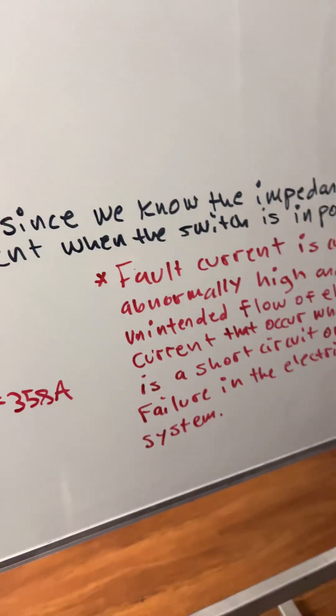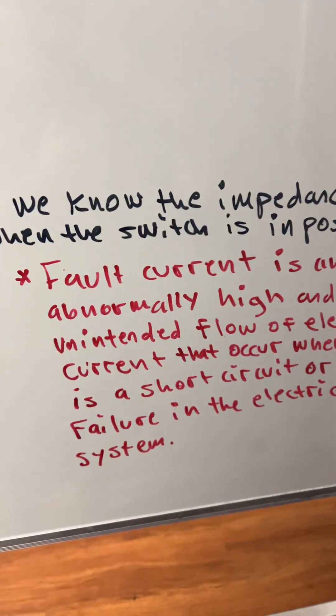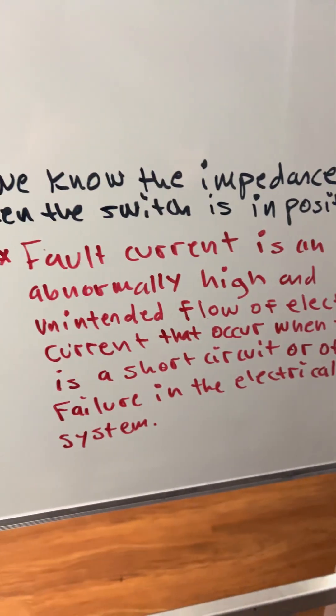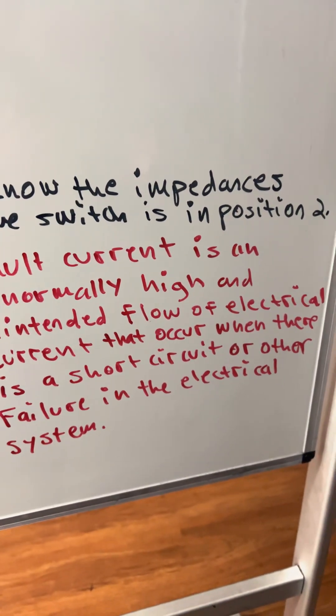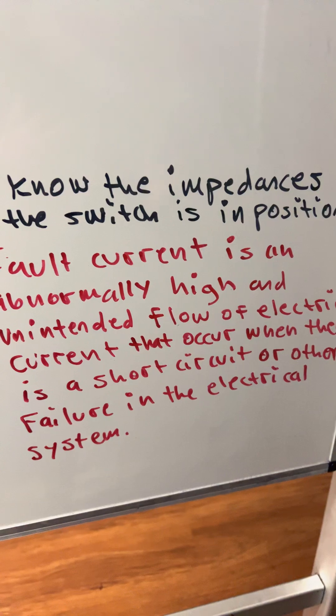So what is a fault current? A fault current is an abnormally high and unintended flow of electrical current that occurs when there is a short circuit or other failure in the electrical system.